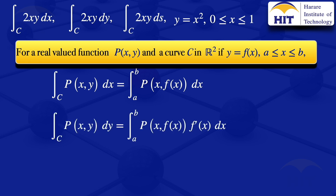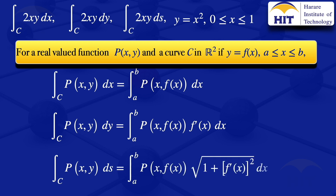The integral of p of xy with respect to y along the curve C equals the integral from a to b of p of x, f of x multiplied by f prime of x with respect to x. Then the integral of p of xy with respect to the arc length along the curve C equals the integral from a to b of p of x, f of x multiplied by the square root of 1 plus f prime of x squared with respect to x.